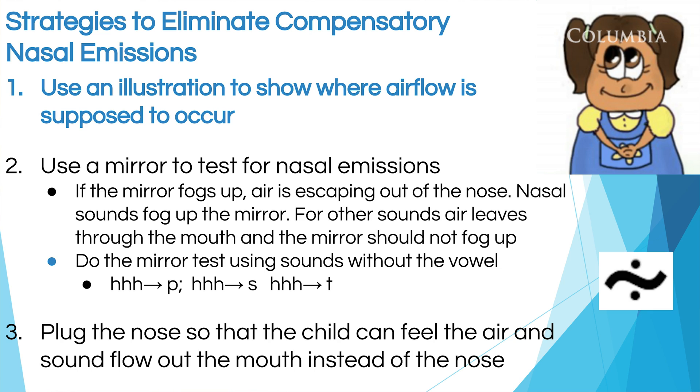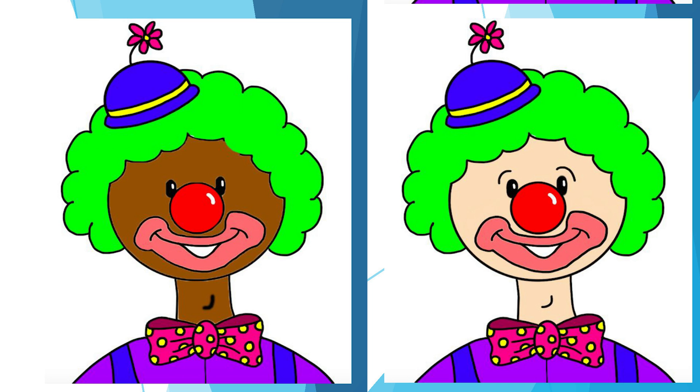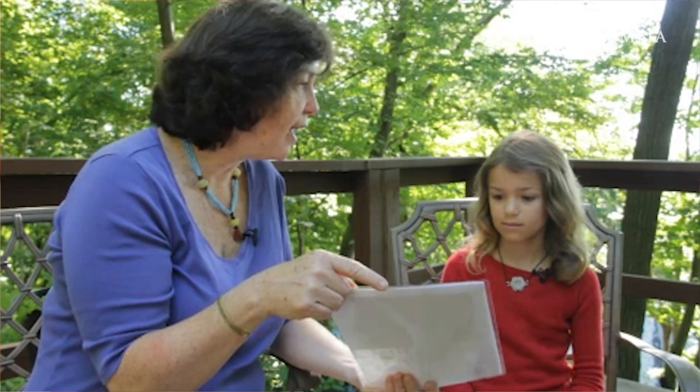What do you do with nasal emissions in therapy? You may want to show the child the difference between a nasal sound and oral sounds. They need to become aware that when you talk, most of your sounds come out of your mouth, not your nose. You might use a visual — a picture of a clown with a big nose and lips and a bow tie. When the child makes a sound that comes out of their nose, you say, 'I think that came out of their nose.' But when they say it out of their mouth, like 'son,' you point to the clown's mouth and say, 'That came out of the clown's mouth. Good job.'